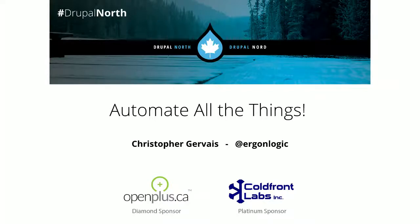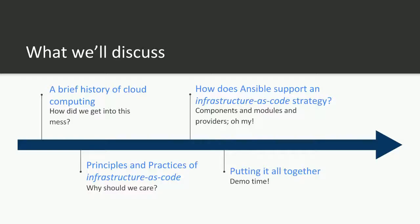My presentation is titled Automate All the Things. The idea is that all of programming is automation of one sort or another. We're getting to a point where we can automate a lot of stuff that used to be very manual. We'll look at the history of cloud computing going back to the late 1950s, going up to more or less the present day. Then we'll look at infrastructure as code — what it is, what the benefits are, what we're trying to accomplish.